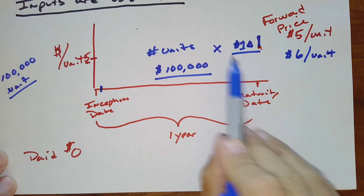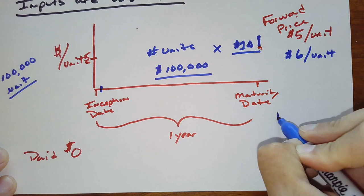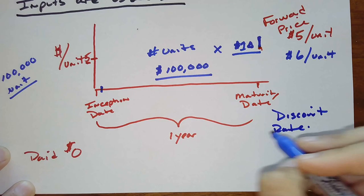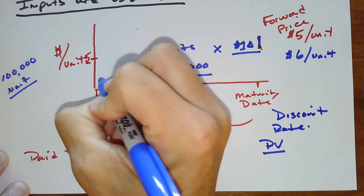So in this particular case, I would have to start coming up with a, because I know that I have a value of $100,000 here, I have to come up with a discount rate for this particular contract. And figure out what is the present value of this $100,000 gain. And then that is going to be my fair value on this day.